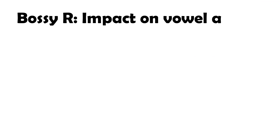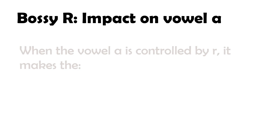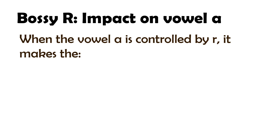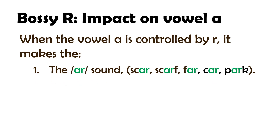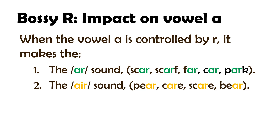The impact of the Bossy R on the vowel A. When the vowel A is controlled by R, it makes the following sounds: the AR sound, as in the words scar, scarf, far, car, and park; and the AIR sound, as in the words hair, scare, and bear.